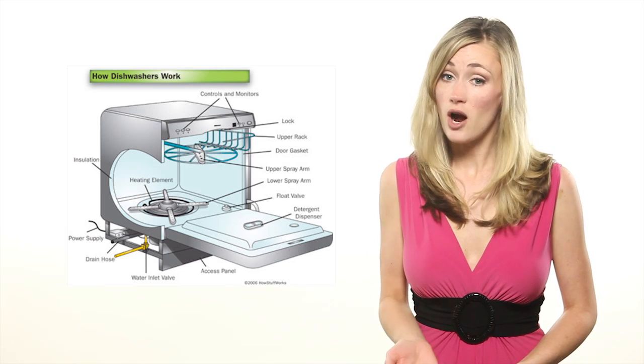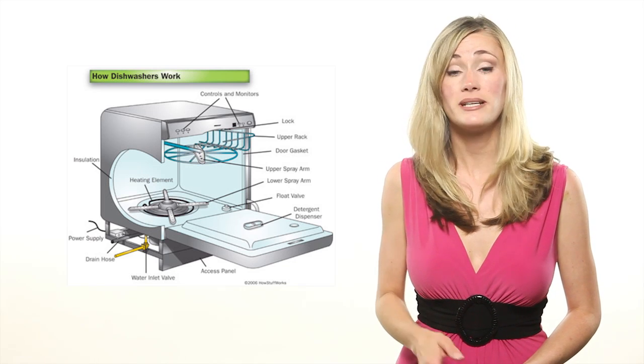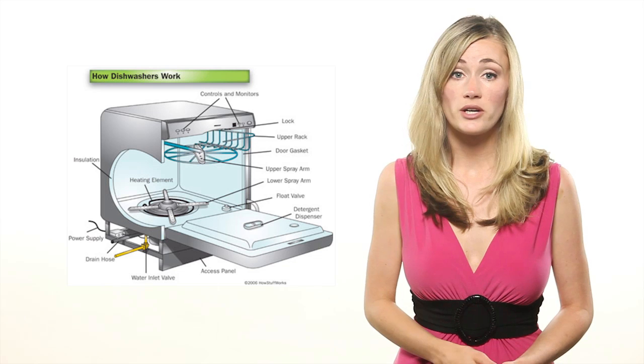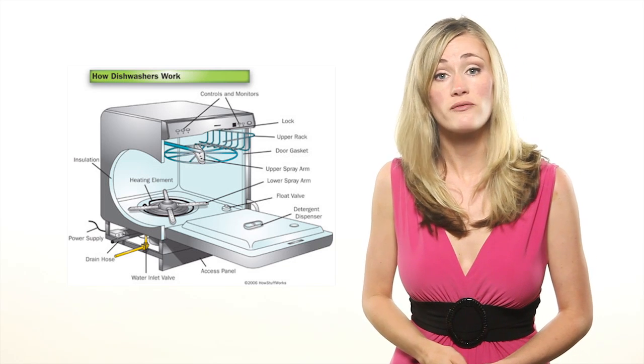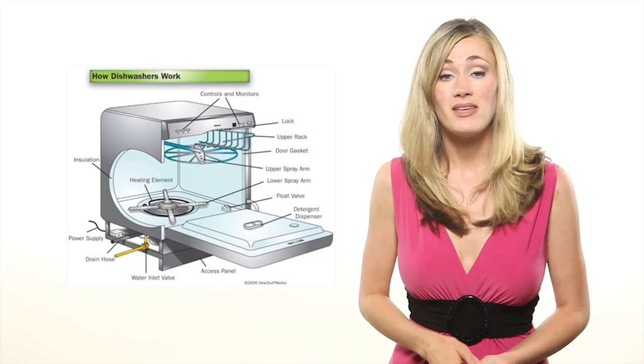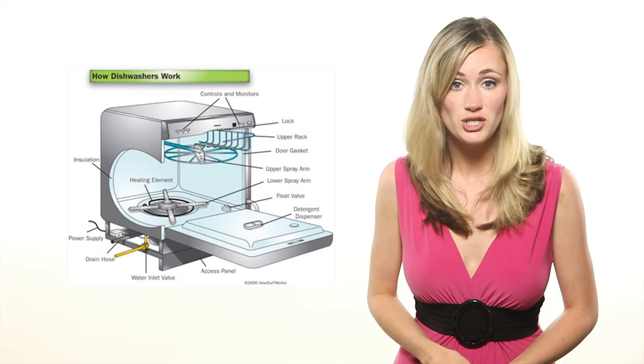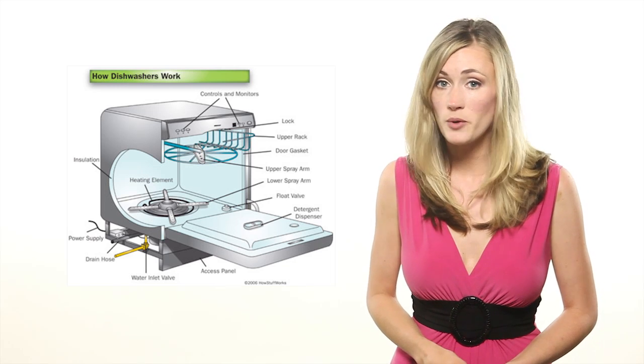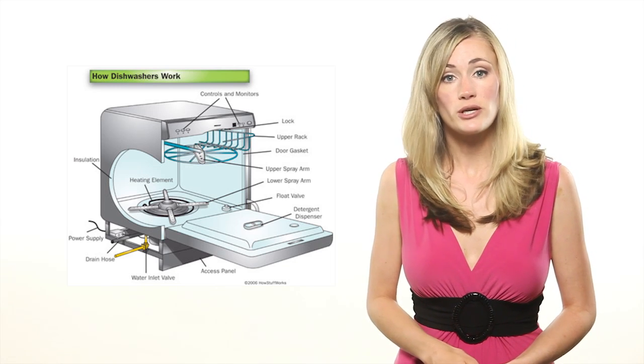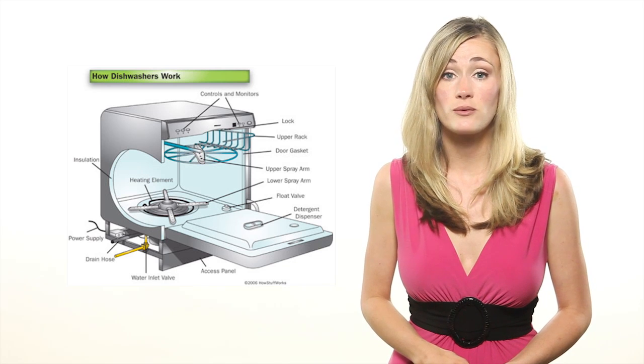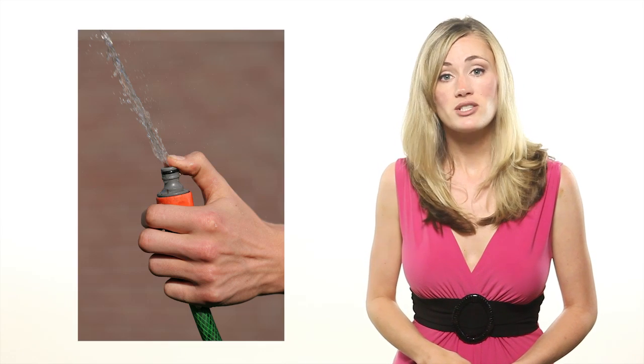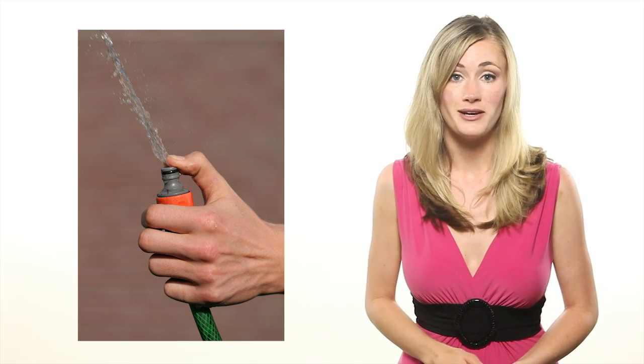Although dishwashers are watertight, they don't completely fill with water, only the bottom area. There the water heats to 130 to 140 degrees Fahrenheit. Then a pump shoots the hot water up to the jets, where it's forced out through the spray arm. The spray arm increases the water pressure by forcing it through small directional holes, much like putting your thumb on the water coming out of a garden hose.